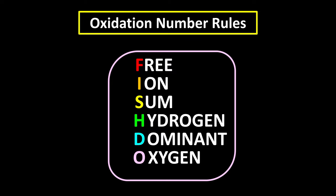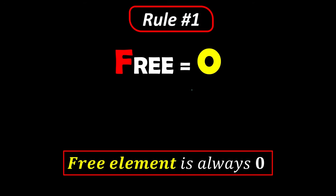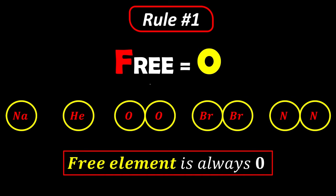Let's go one by one. Rule number one: F means free. It tells us that the oxidation number for free elements is always zero. Free elements means it's all by itself — it didn't combine with other elements. No matter if it's atoms like sodium and helium, or molecules like oxygen, bromine, or nitrogen, as long as it's all by itself, your oxidation number is always zero.